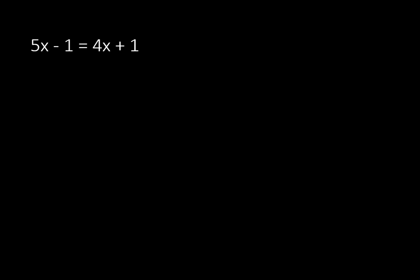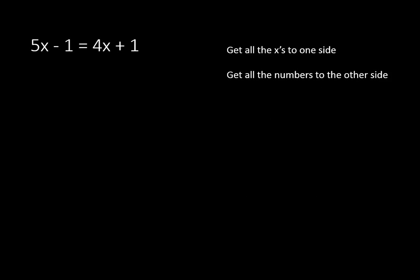So let's go ahead and solve this equation: 5x minus 1 is equal to 4x plus 1. The steps for solving an equation when you have x on both sides is: first you have to get the x's to one side of your equation, then you have to get all the numbers to the other side, and then we're going to follow through with actually solving the equation.